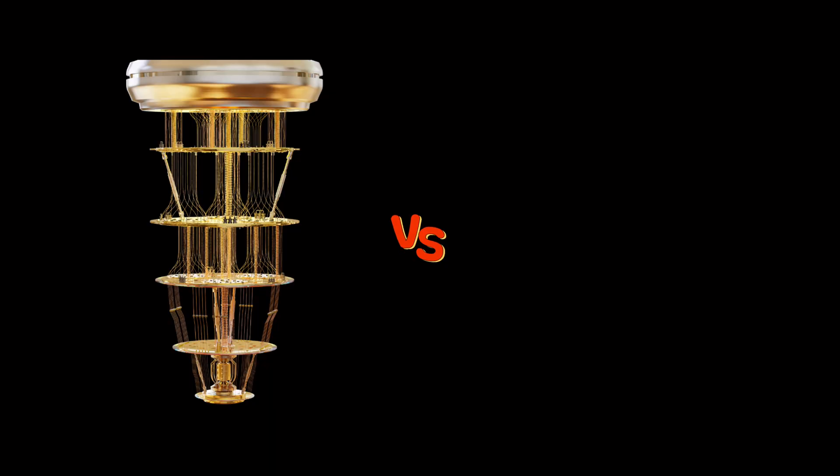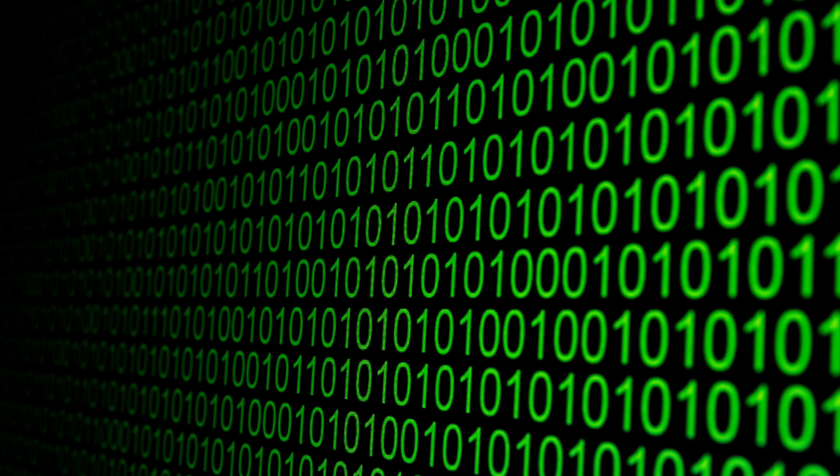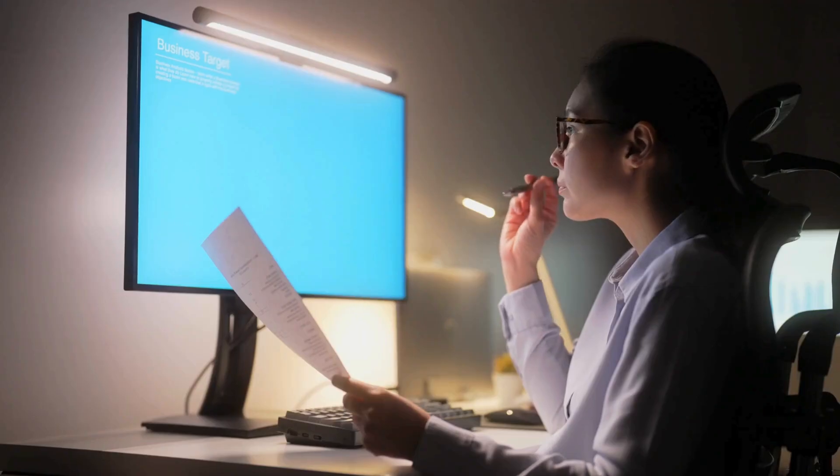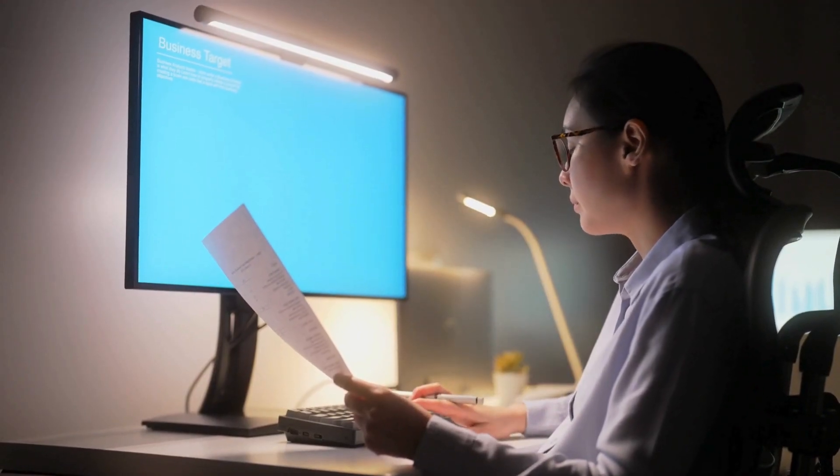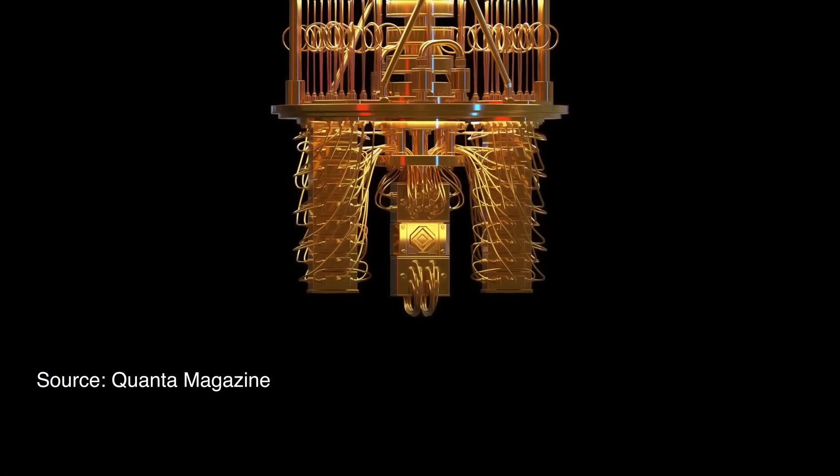First, let's see the difference between a quantum computer and a normal computer. Our computers are designed for general computing. They process information in binary — that is zeros and ones — and are used for deterministic tasks such as running applications, performing calculations, data processing, etc. But quantum computers don't process information in zeros and ones.